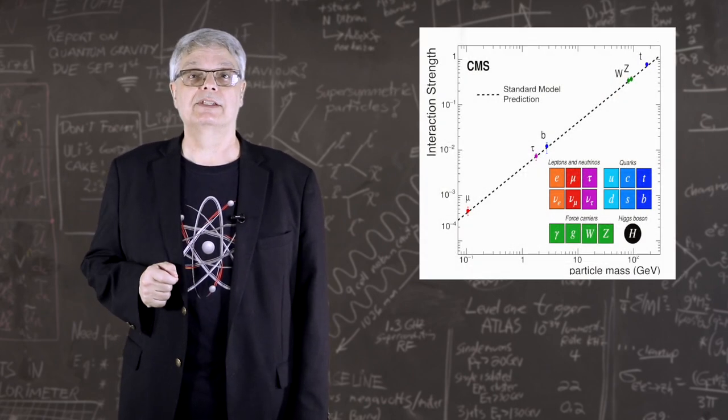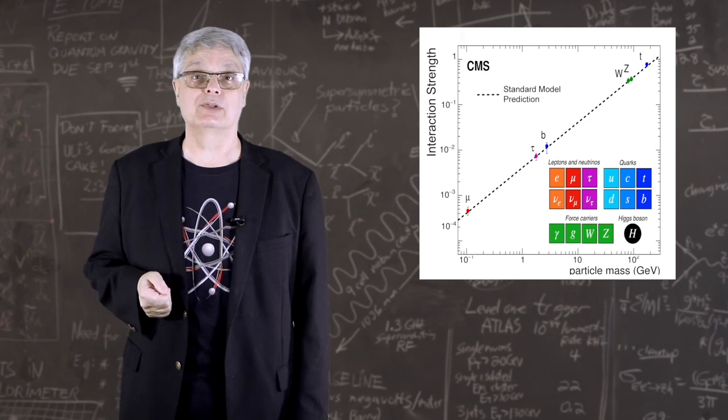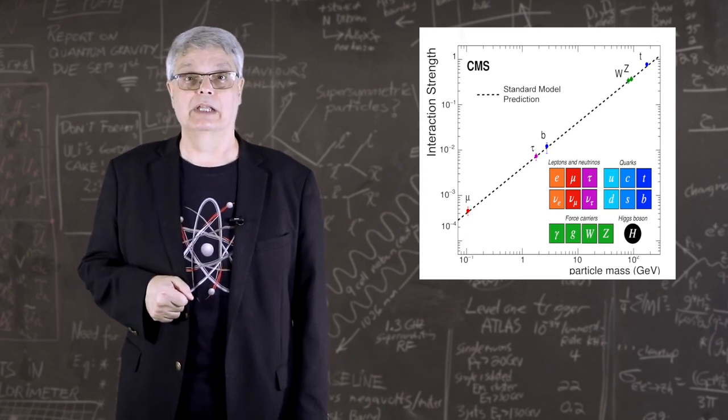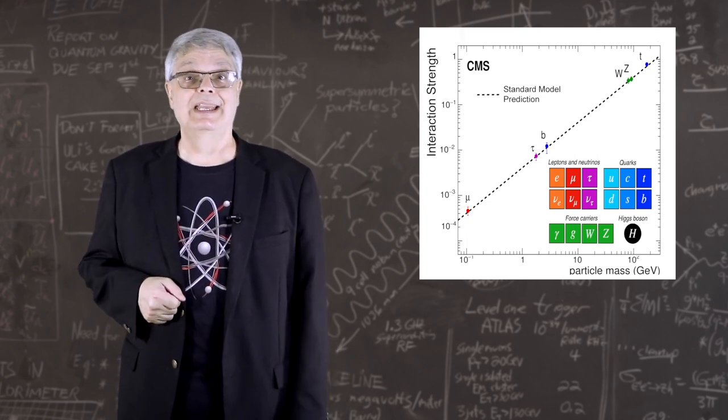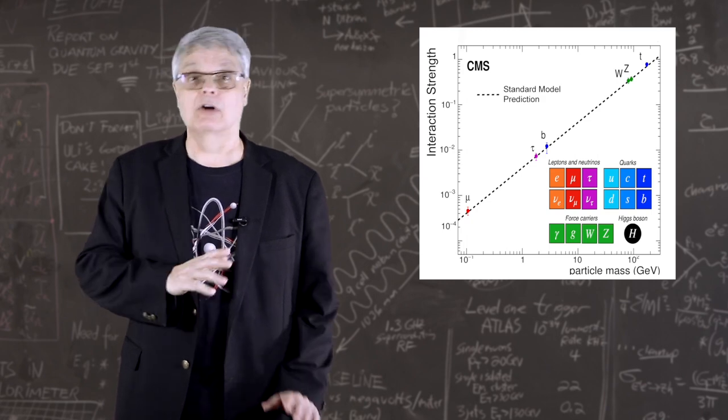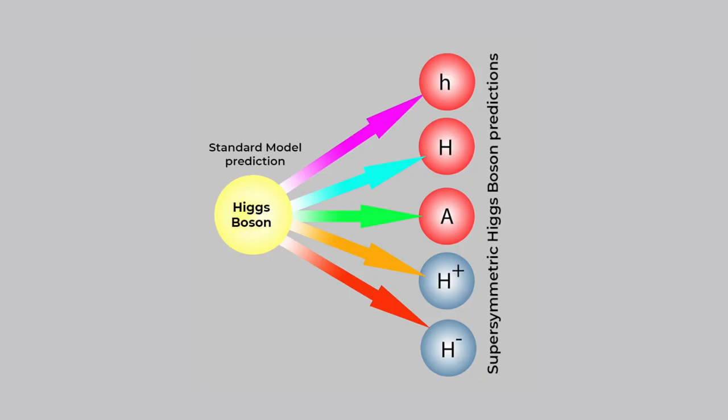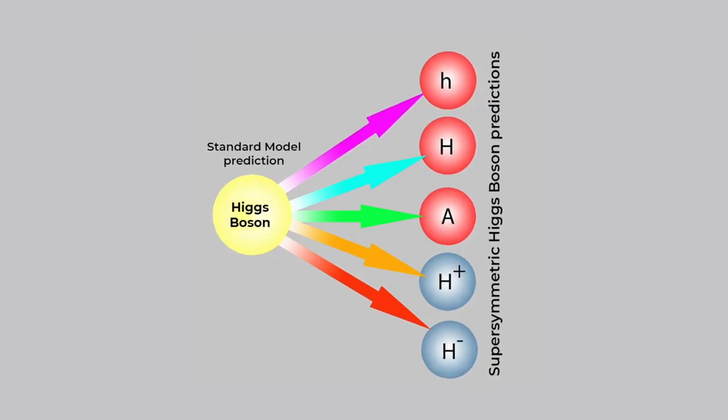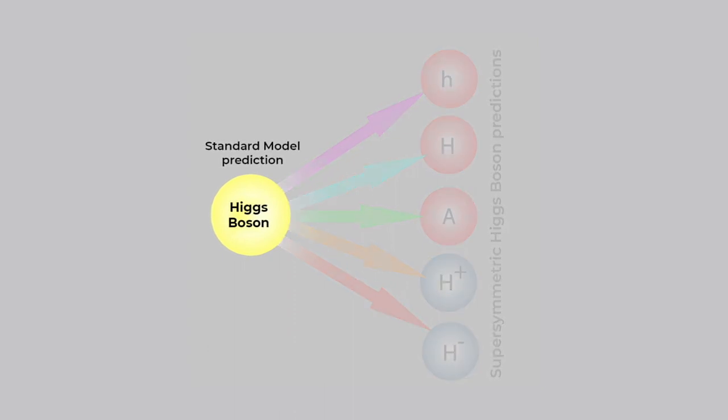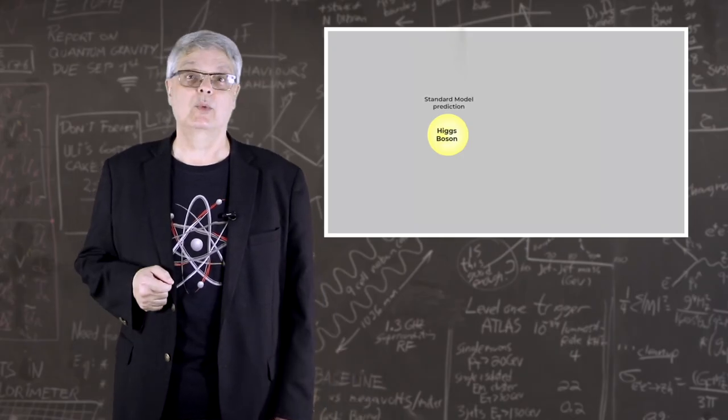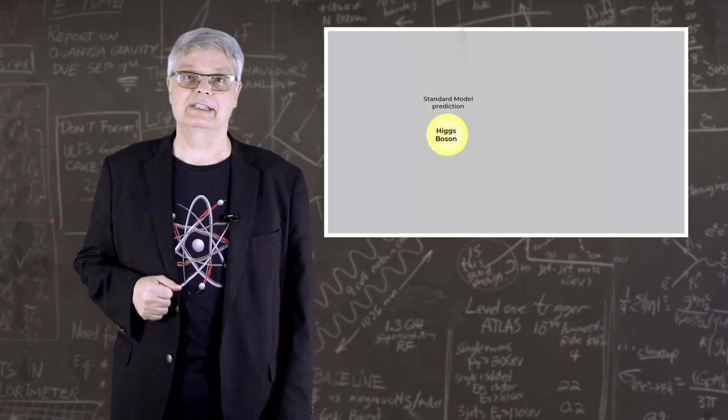Both experiments have seen the Higgs boson decay into other particles, including tau and mu leptons, as well as bottom quarks. And the theory and measurement are all consistent with Higgs theory. Furthermore, searches for other Higgs bosons have come up empty. So far, there is no evidence that there are additional Higgs bosons. Again, another win for the theory proposed back in 1964.